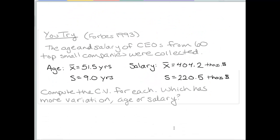To finish up, you should try this exercise. We've got some data on the age and salary of CEOs from 60 top small companies. Compute the coefficient of variation for both age and salary, and use those to determine which one has more variation. That's all for this video.